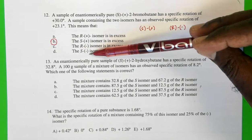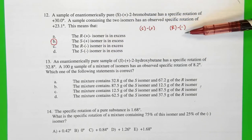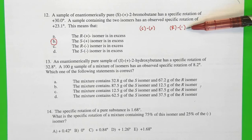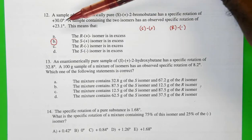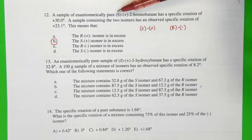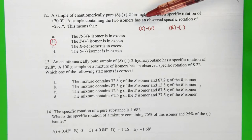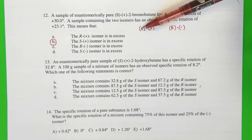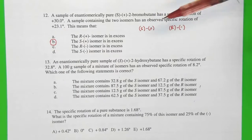And the other option is the S(-) isomer, which does not exist. So the fact that we have a positive optical rotation in a sample where the specific rotation is +30 degrees means that the enantiomeric excess is the S(+) isomer.